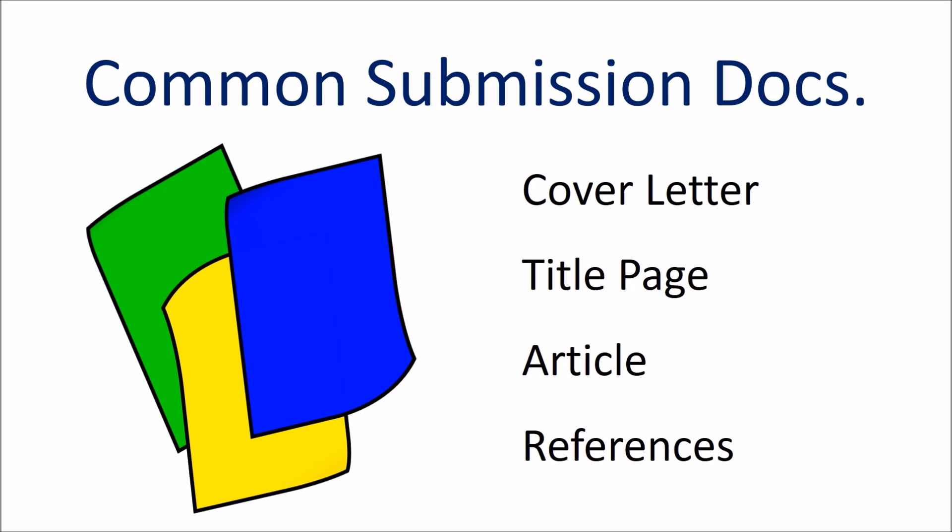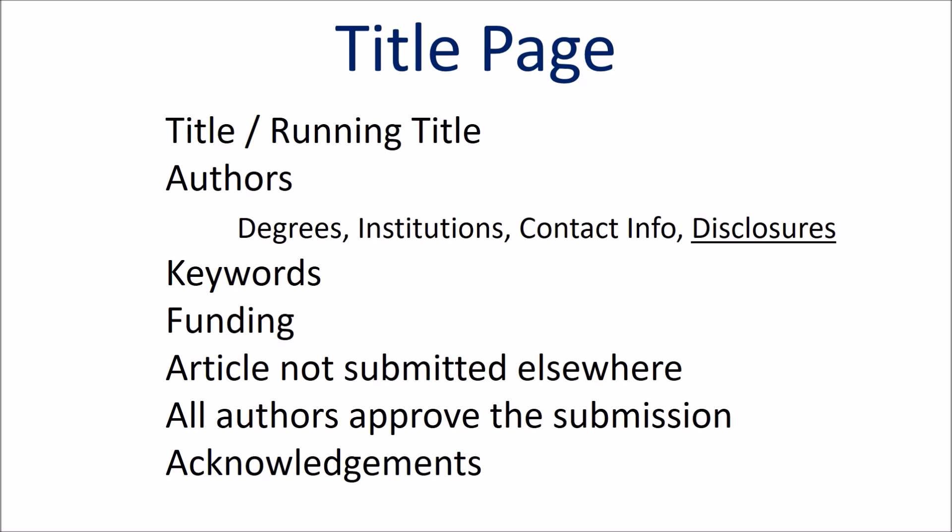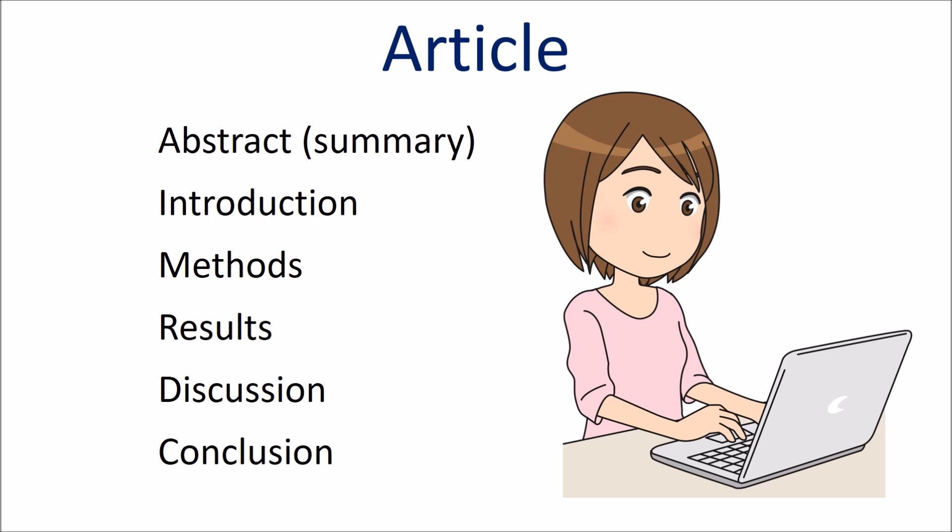Journals typically ask for a cover letter which briefly describes why the article should be published. A title page contains information about the authors. The article and references are, of course, self-explanatory. The title page usually includes a short version of the title known as a running title, keywords to help readers find your article, a statement about funding, and confirmation that you have not submitted the article to another journal at the same time. Here is how a research article is usually structured.